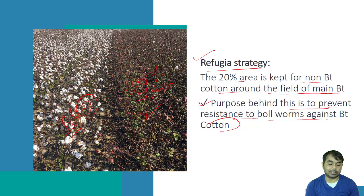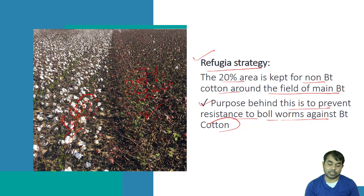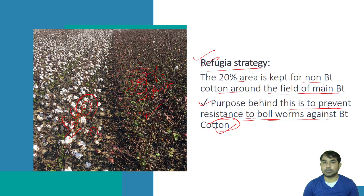Instead of feeding on the BT cotton, the boll worms will feed on the 20% non-BT area where they can survive. So the next generation will not be under pressure to develop resistance against BT cotton. That is the purpose of the refugia strategy. I hope this video is very useful to you all — please comment, like, and subscribe if you are new.